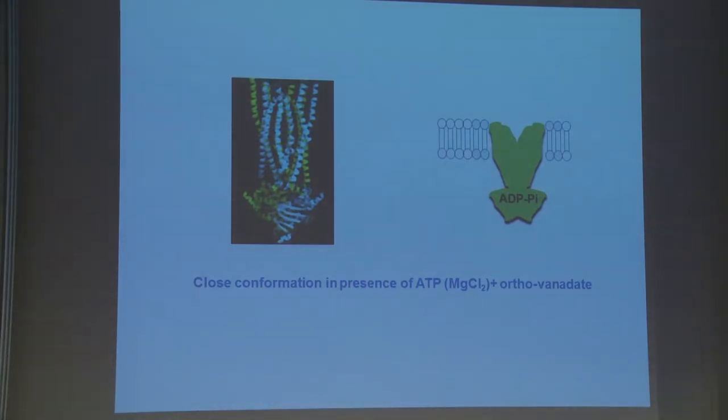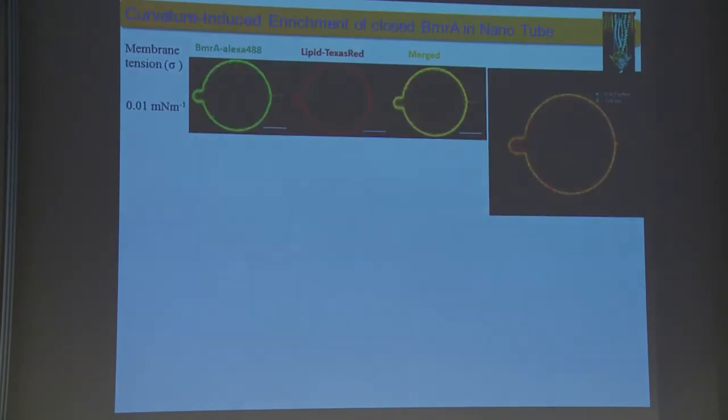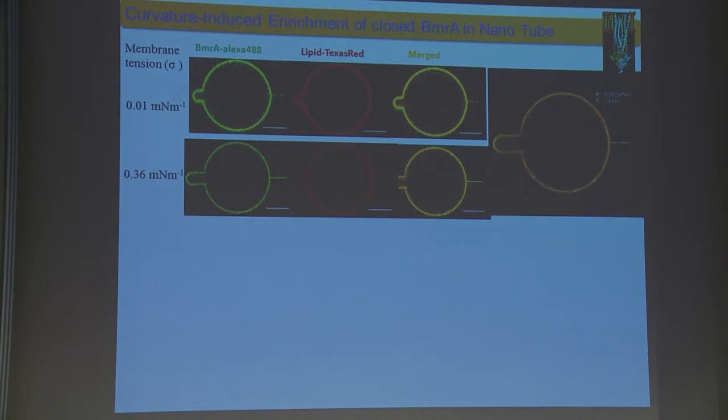Let's talk about closed conformation, which we got in presence of ortho-vanadate. This is the fixed conformation. We reconstituted this protein. We pulled the tube and started increasing the tension. You can see from the movie. When we increase tension, we modulate the radius. As we modulate the radius, you can see the protein is sorting. There is no protein. As you increase tension, you modulate and decrease the radius, and then protein sorting starts.